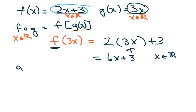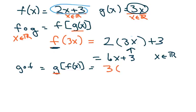Now let's do g composed of f of x. I'm going to write down g, which is 3x, and everywhere there's an x, I put parentheses and dump in f of x, which is 2x plus 3. Simplify, and we get 6x plus 9, where x belongs to all reals.